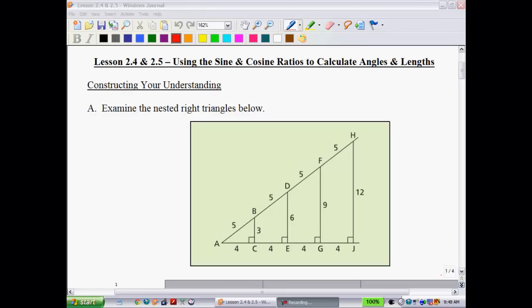All right, lesson 2.4 and 2.5 using the sine and cosine ratios this time to calculate angles and lengths. It's going to be very similar to what we did with the tangent ratio, only this time, of course, two different ratios. You're going to see that because we're dealing with two different ratios, it's going to involve different sides and angles.